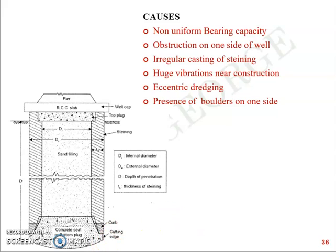How do we check tilt and shift? Using fundamental surveying tools — leveling equipment and the total station — will serve the purpose. As the engineer at site, you are responsible for checking tilt and shift at every one meter of depth sunk. If you find tilt or shift greater than the allowable stipulated value, you will have to rectify it.